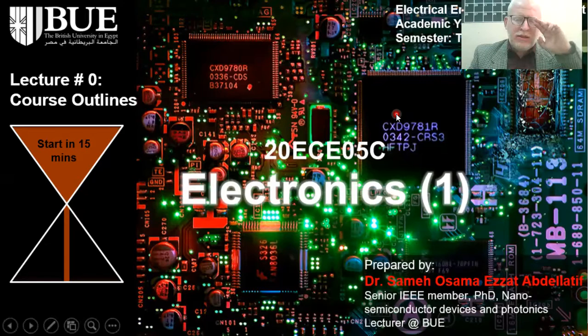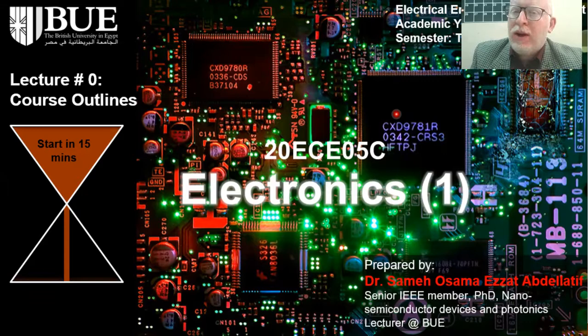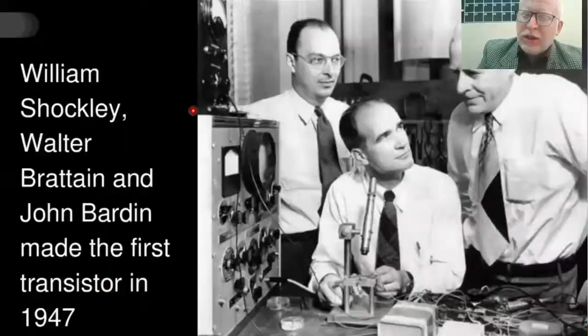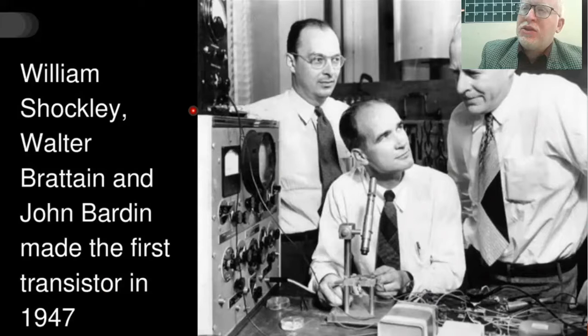So let's return to my slides. This is lecture number zero — the course outlines. Our module is Electronics One and its code is 20ECE05C. The journey starts 74 years ago, when Shockley and his team invented the first transistor ever. They were awarded the Nobel Prize based on this invention. By 1947, this is considered the turning point for the electronics industry.